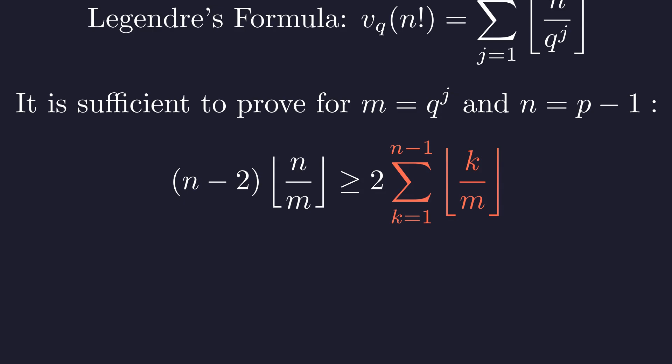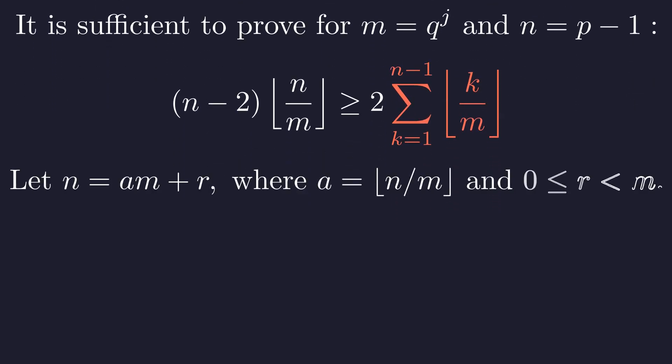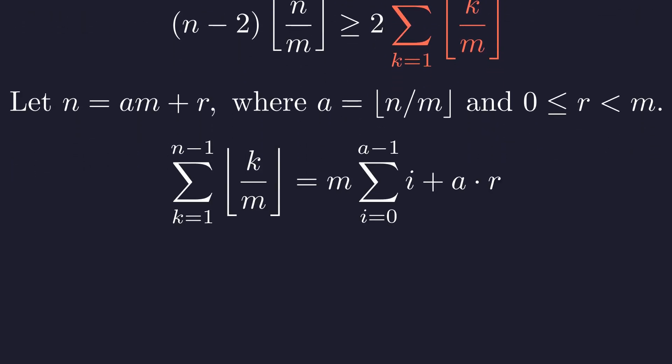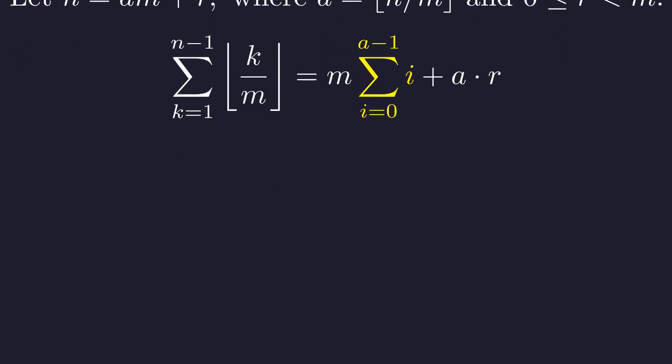To tackle this sum, let's think about it geometrically. I'll write n as a times m plus r, where a is the quotient and r is the remainder when we divide n by m. Picture the numbers from 1 to n minus 1 arranged in blocks of size m—we have a complete blocks and then a partial block with our remaining numbers. In the first block, the floor values are all 0; in the second block, they're all 1, and so on. The last complete block has floor values of a minus 1, and the partial block has r terms each with floor value a.